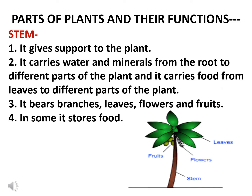Stem: it gives support to the plant above the soil. It carries water and minerals from the root to different parts of the plant, and also carries food from leaves to different parts of the plant. The stem bears branches, leaves, flowers and fruits. Some stems also store food.